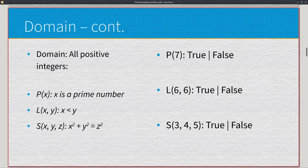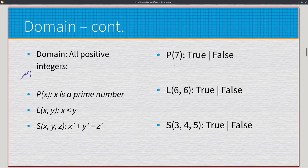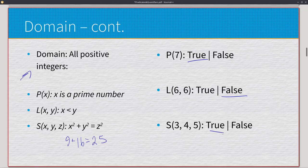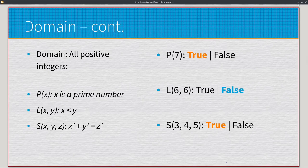Let's do value substitution with a domain restriction. The domain is all positive integers. We have p(x): 'x is a prime number,' l(x,y): 'x < y,' and s(x,y,z): x² + y² = z². For p(7): seven is a prime number — true. For l(6,6): 6 is not strictly less than 6 — false. For s(3,4,5): 3² = 9, 4² = 16, 5² = 25, and 9 + 16 = 25 — true. So we get true, false, true. The domain restricts us from using negative values or zero, and we did basic value substitution.